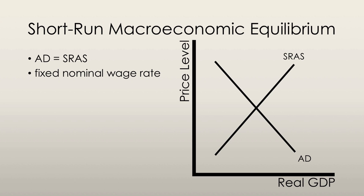Short-run macroeconomic equilibrium occurs when the quantity of real GDP demanded is equal to the quantity of real GDP supplied. In essence, it's where aggregate demand intersects short-run aggregate supply.